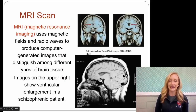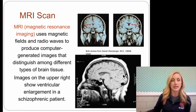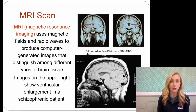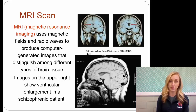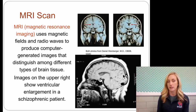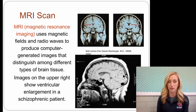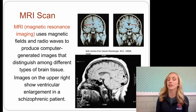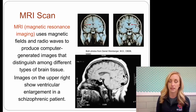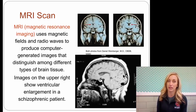An MRI scan — magnetic resonance imaging — uses magnetic fields and radio waves to produce computer-generated images that distinguish among different types of brain tissue. It looks at soft tissue. Images on the upper right show ventricular enlargement in a schizophrenic patient, which is something important for you to know in one of our last units about schizophrenia.